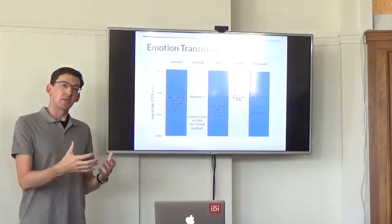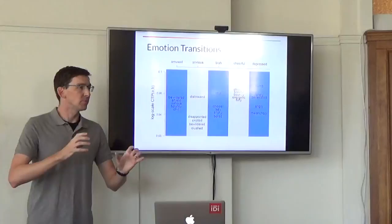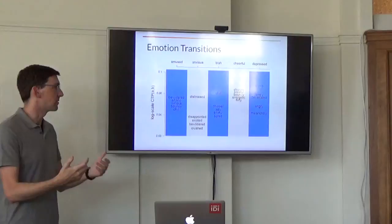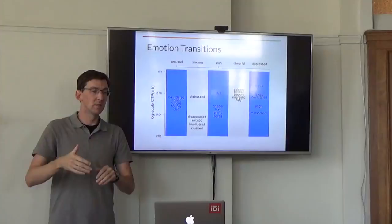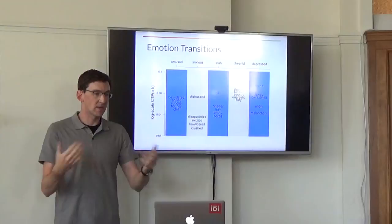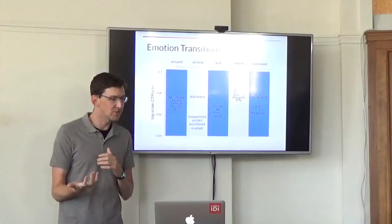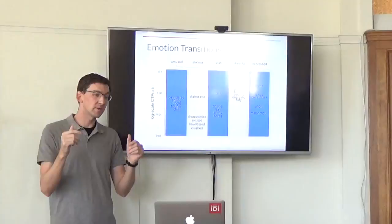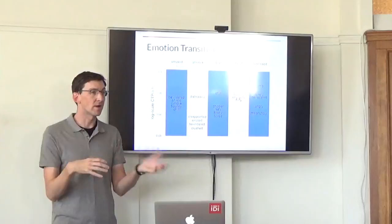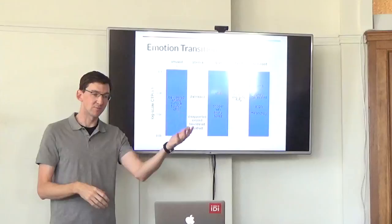So to do this exploratory data analysis, we built a simple transition model, which is just measuring empirically from the mood data set what your likelihood is from going from one emotional state to another. Here's a summary of a few of them. So at the top there, it says amused, anxious, blah, cheerful, and depressed. And then we have the nearest neighbors by these transition probabilities below them. So this is saying that if you're in an amused state, you're most likely to transition to bewildered, followed by artistic, curious, bouncy, and chill. Anxious is more interesting. That's transitional. So you're most likely to transition to distressed. But down there, you also see disappointed, excited, bewildered, crushed. So from an anxious state, the outcome might be good, or it might be bad, or it might be confusing.